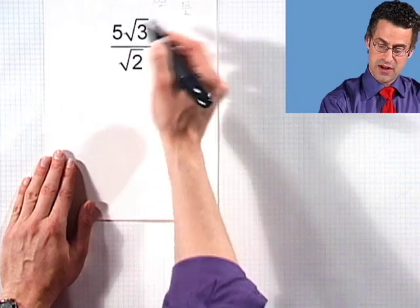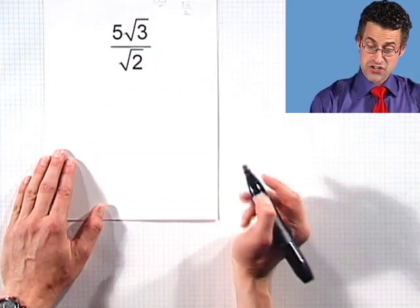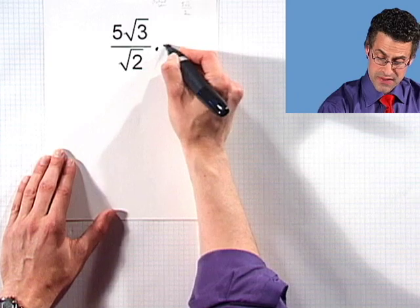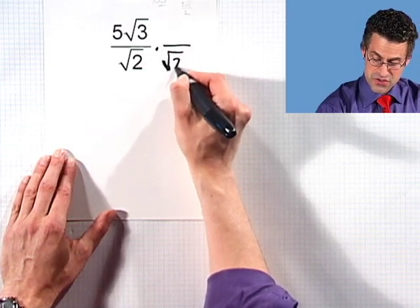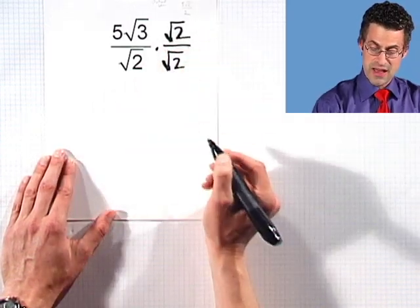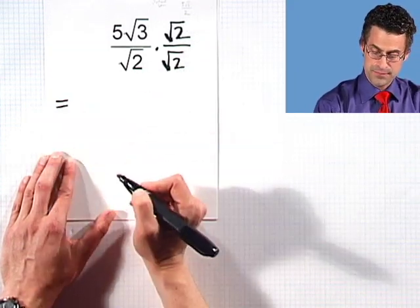Take a look at 5 square root of 3 divided by the square root of 2. If you want to rationalize the denominator, we just multiply the top and the bottom by the square root of 2. Doesn't change the value of the quantity. It's equivalent.